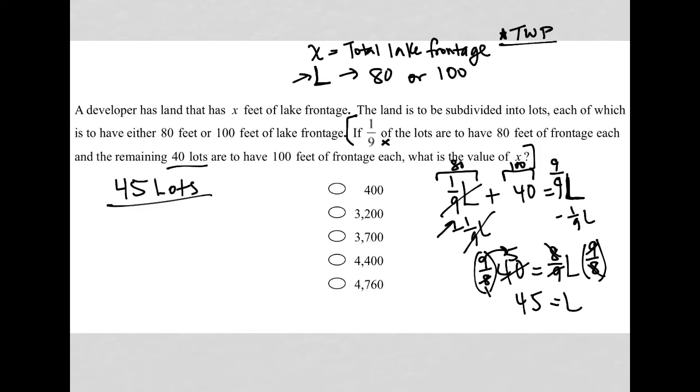Out of those 45 lots, I know because the question told me that 40 of them, 40 lots, have 100 feet of frontage. So how many total feet is that? I have 40 lots that have 100 feet of frontage each. So that will be a total of 40 times 100, which is 4,000. So I get 4,000 feet of lake frontage from those 40 lots.